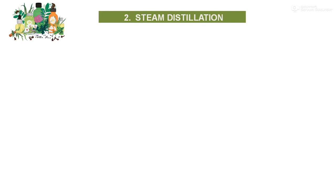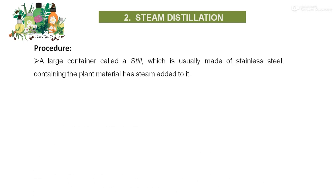Steam distillation is the most popular method used to extract and isolate essential oil from plants for use in natural products. This happens when the steam vaporizes the plant material's volatile compounds, which eventually go through the condensation and collection process. We need a large container, usually made of stainless steel, containing plant material to which steam is added.